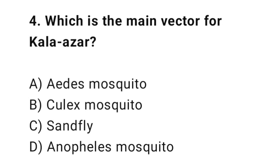Question number four: which is the main vector for Kala Azar? The right answer is C — sand fly. Kala Azar is transmitted by the bite of infected sand flies.